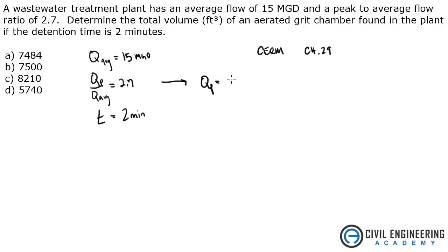So Q peak is going to be 2.7 times 15 MGD, and I am going to use a conversion here because they want it in cubic feet. If you go to the front of the CERM it has unit conversions for this. And I am going to use 1.54 cubic feet per second per 1 million gallons per day.